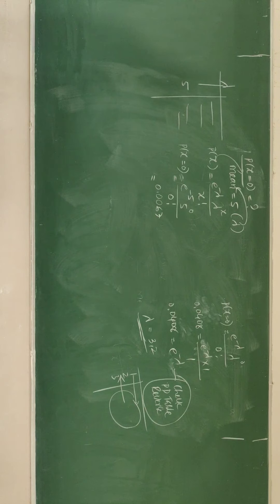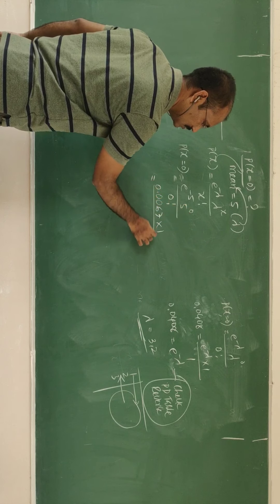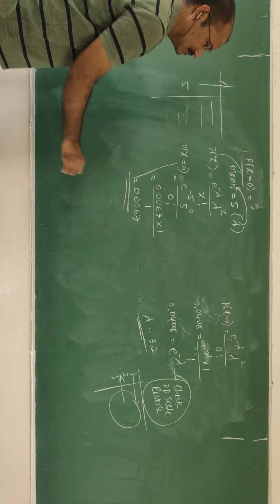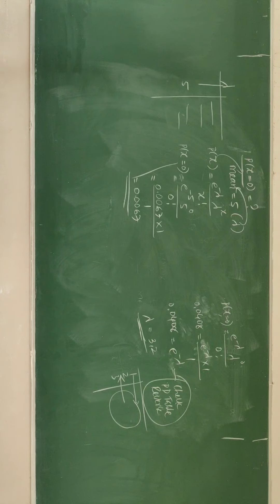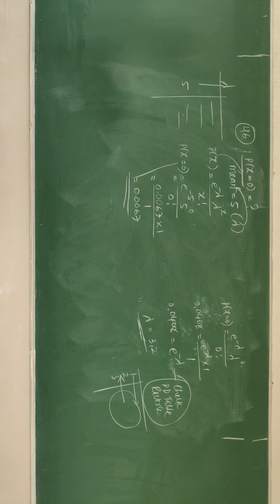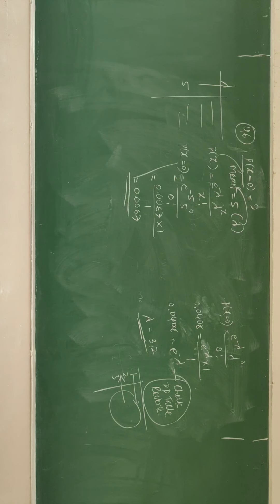Then move to question number 42. Question 42 is the reverse now. The question is: standard deviation equal to 4, then we need to find the mean. Mean equal to how much? This was the question. Now we need to find the relation between the standard deviation and variance. We know that variance equal to lambda, and standard deviation equal to root of variance.